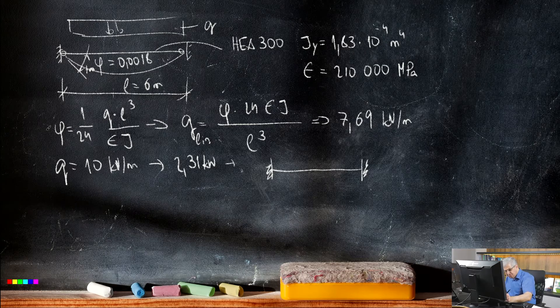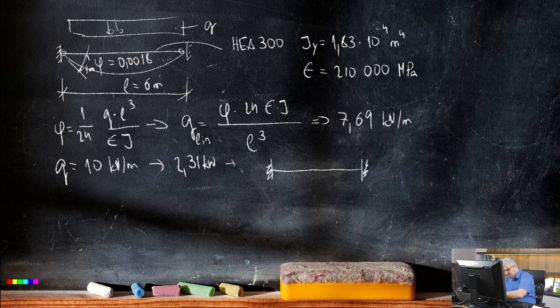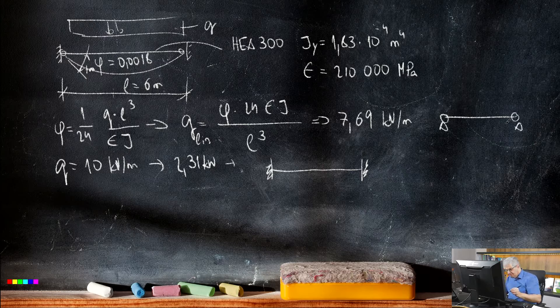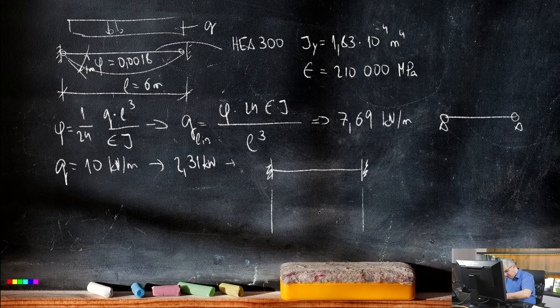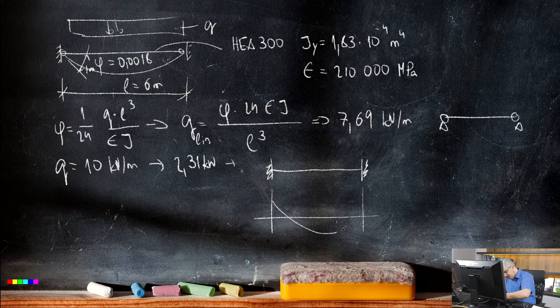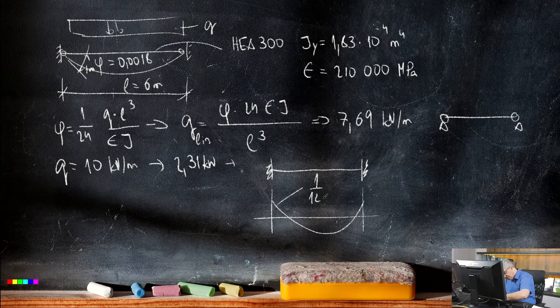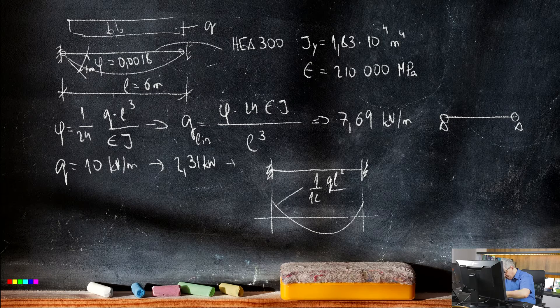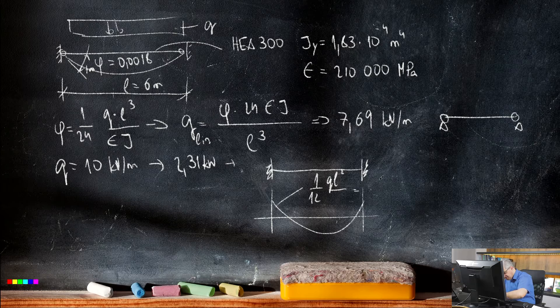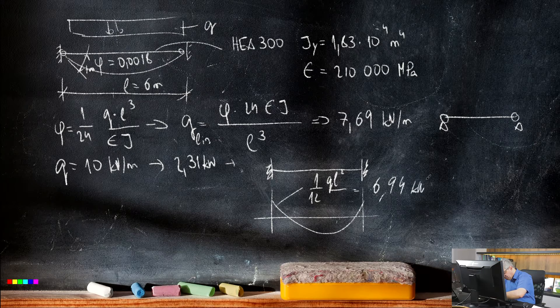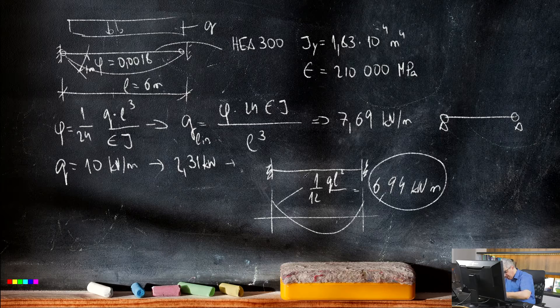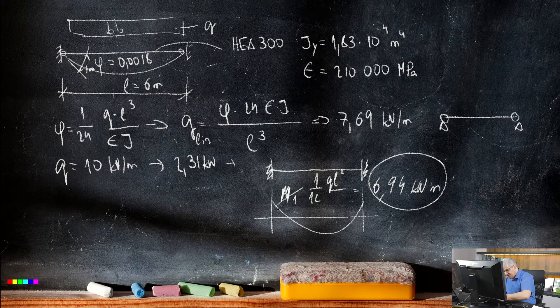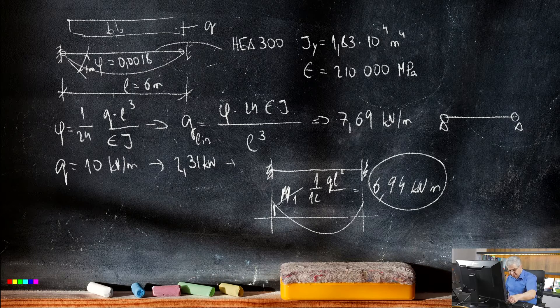For loads which are smaller than this 7.69 kN we have a simply supported member. And this member gets some results. This will be the bending moment and this bending moment is 1/12 qL squared and this is 6.94 kNm.